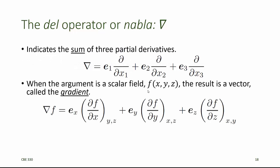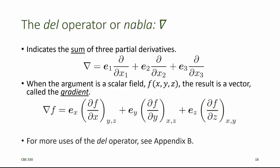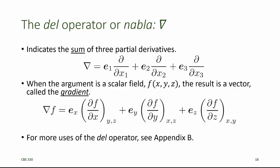When the argument of the del operator is a scalar field, the result is a vector called the gradient. Appendix B of the notes summarizes the algebra and the calculus of scalars, vectors, and tensors, and it includes some additional uses of the del operator. When we see the del operator as a gradient of a scalar field, as shown here, then we know that a model equation is a PDE model, because it contains these partial derivatives.